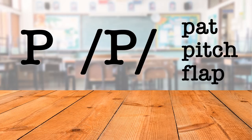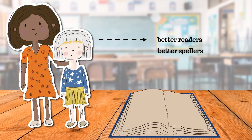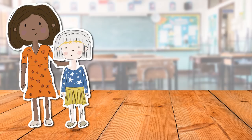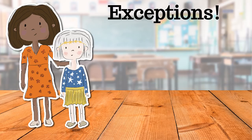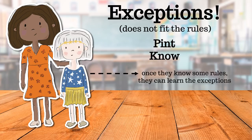For example, the letter P usually makes the P sound. This could help children to learn to read English words such as pat, pitch, and flap. Children who are taught phonics are better readers and spellers. When children know the rules, they can remember more. In many scripts and languages, there are also exceptions. An exception word does not fit the rules. In English, pint and know are exception words. Once children know some rules, they can learn the exceptions too.